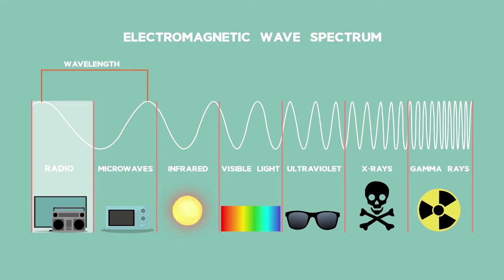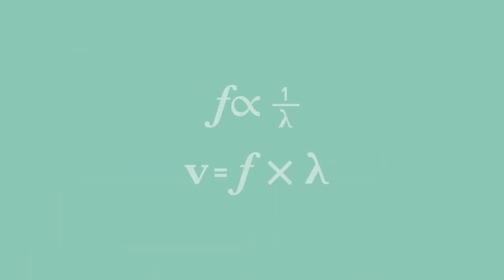Radio waves have the longest wavelength and smallest frequency. Gamma rays have the shortest wavelength and highest frequency. Frequency and wavelength are the inverse of each other because of the wave equation.